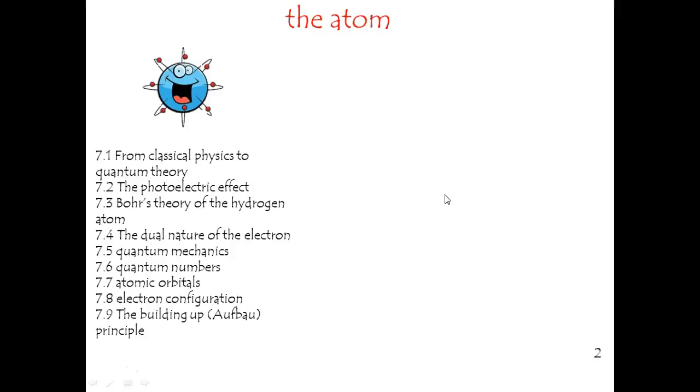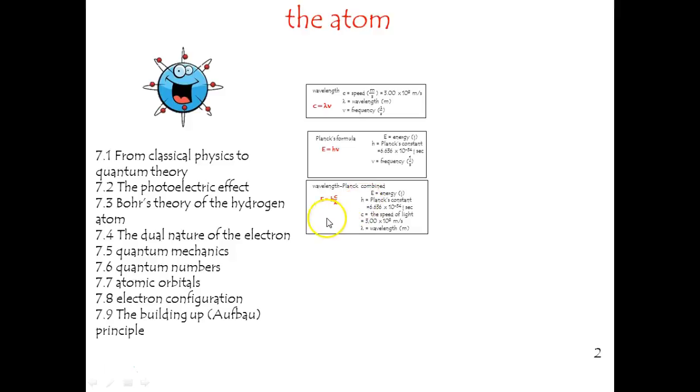Let's take a look at some of the formulas that we'll be covering in this unit. There's the wavelength formula. The speed of light is equal to wavelength times frequency. We can use Planck's constant formula, where energy is equal to Planck's constant times the frequency. And since frequency is equal to that, you can combine them into a combined formula right there, which is handy.